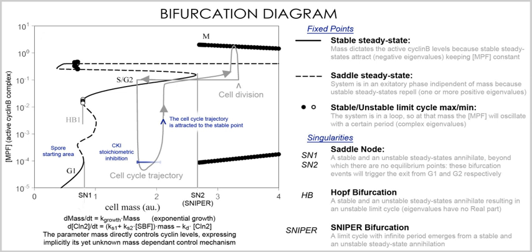In mathematical methods, a model of a biological system is converted into a system of equations, although the word 'model' is often used synonymously with the corresponding system of equations. The solution of the equations, by either analytical or numerical means, describes how the biological system behaves either over time or at equilibrium. There are many different types of equations, and the type of behavior that can occur is dependent on both the model and the equations used. The model often makes assumptions about the system, and the equations may also make assumptions about the nature of what may occur.